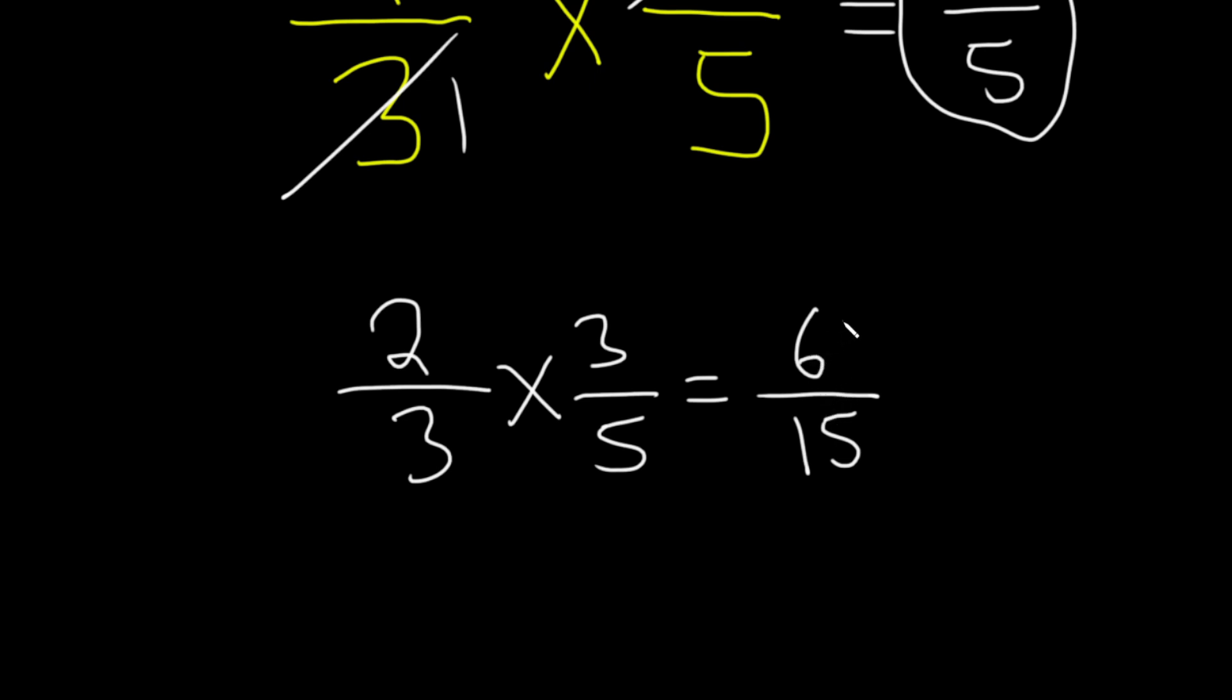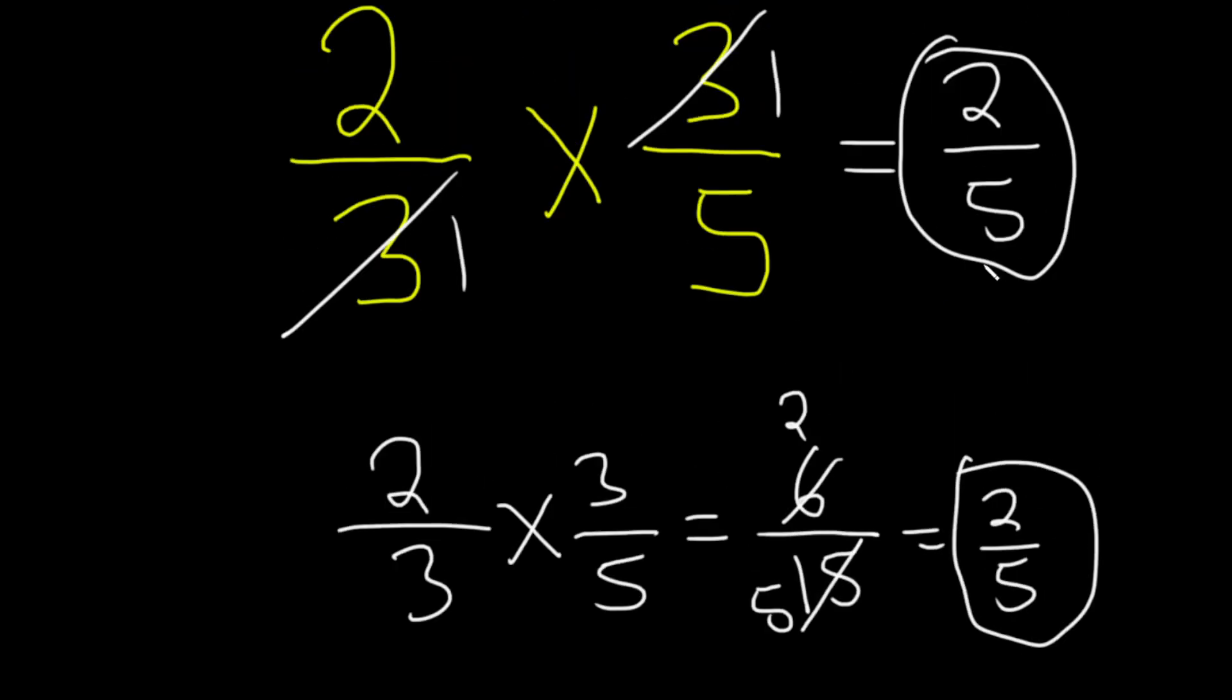Well, 3 goes into 6 twice and 3 goes into 15 five times. So we end up with 2 fifths, which is exactly the answer we got up here.